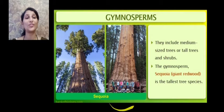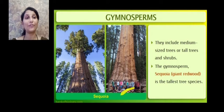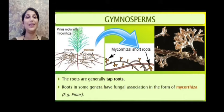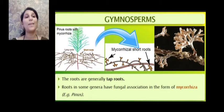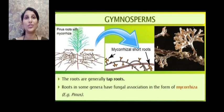Among gymnosperms, Sequoia is the tallest tree species. We can see the Sequoia tree — so tall and so large — with people standing in front of it to understand its diameter. The roots are generally tap roots, in which there is a primary root from which many secondary roots arise. Roots in some genera have fungal association to form mycorrhiza.